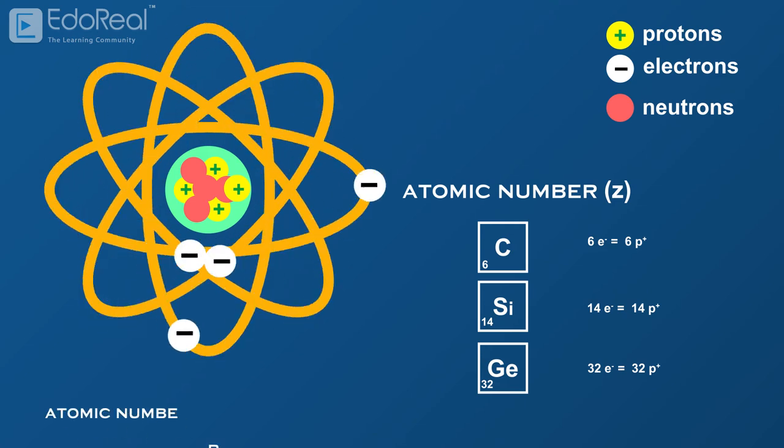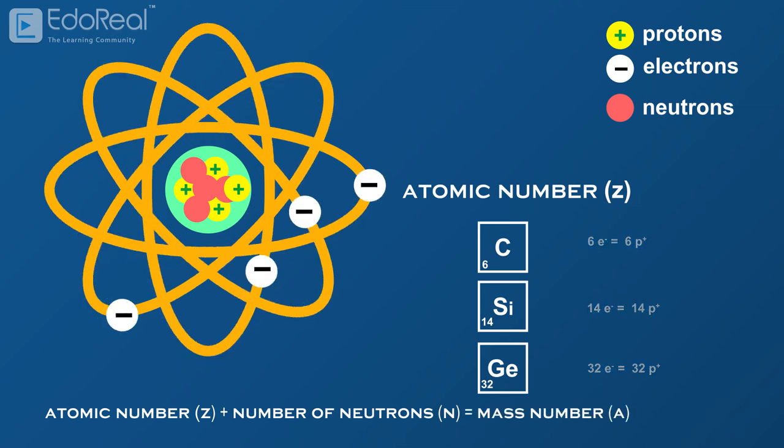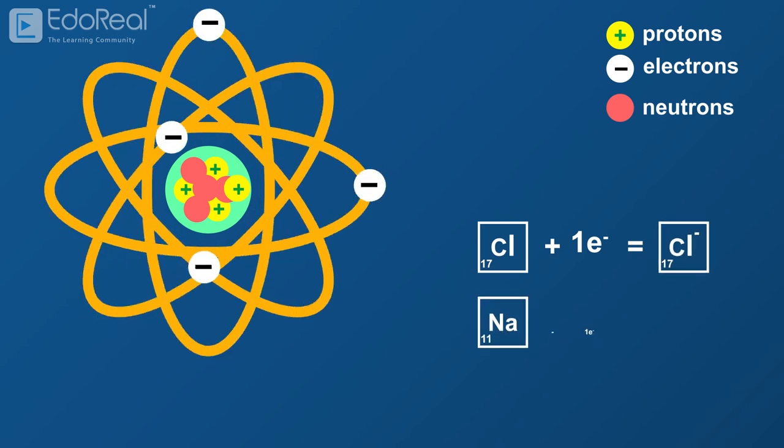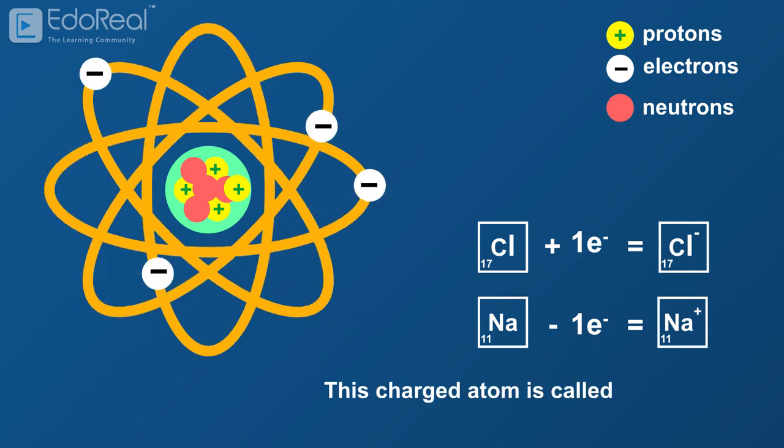The sum of the atomic number and the number of neutrons gives the mass number of an atom. If an atom has more electrons than its atomic number, then it becomes negatively charged. If an atom has fewer electrons than its atomic number, then it becomes positively charged. This charged atom is called an ion.